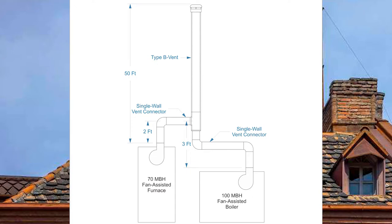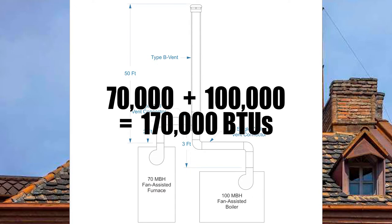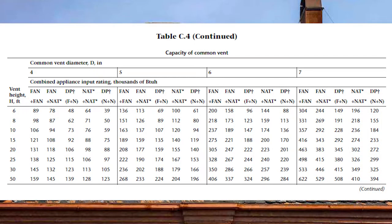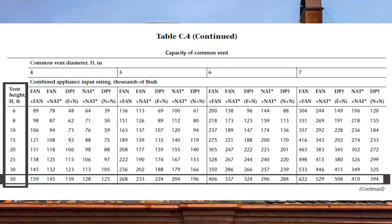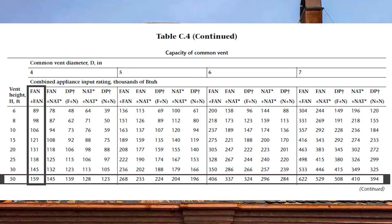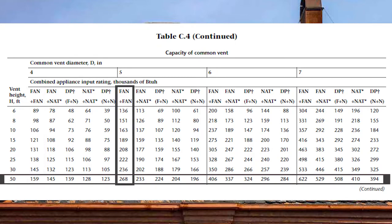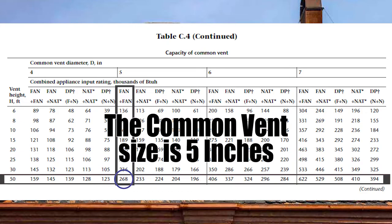Before sizing the common vent I need to combine the BTU load: 70,000 plus 100,000 equals a total BTU load of 170,000 BTUs. Turning to page 206 and coming down to a vent height of 50 feet, I'm looking for fan plus fan since I only have fan assisted appliances. The four-inch common vent is 159,000 BTUs — not quite enough. So I go to the five-inch common vent, which is good to 268,000 BTUs. I have a five-inch common vent.